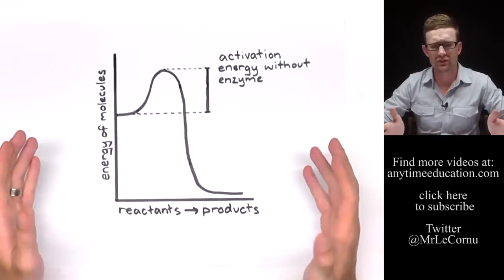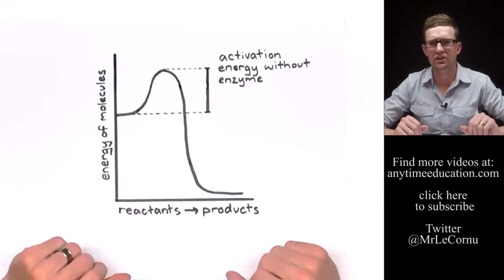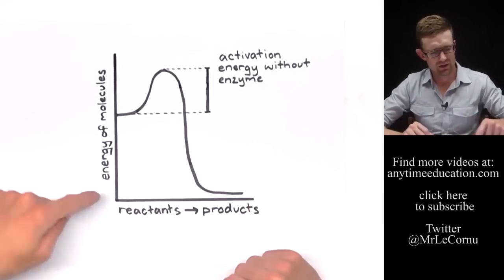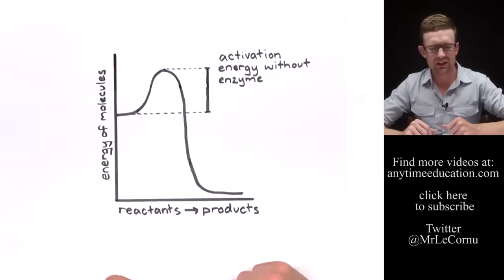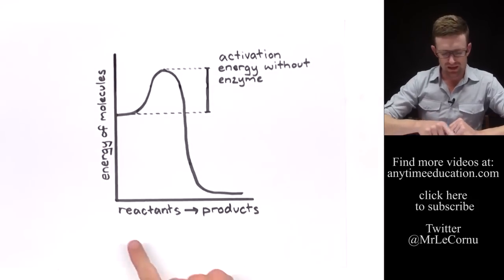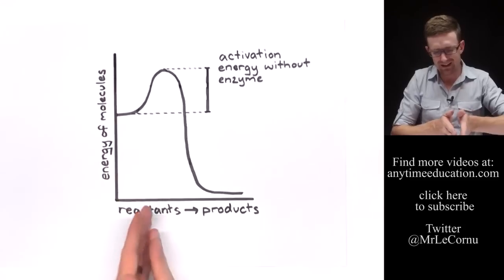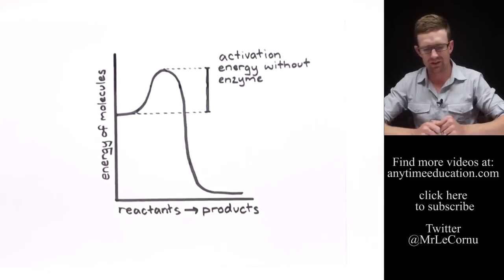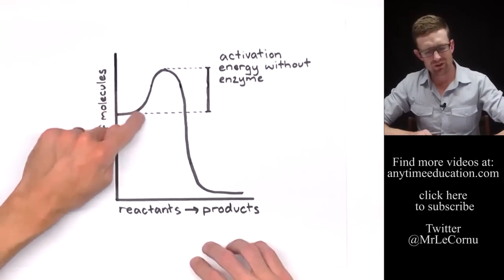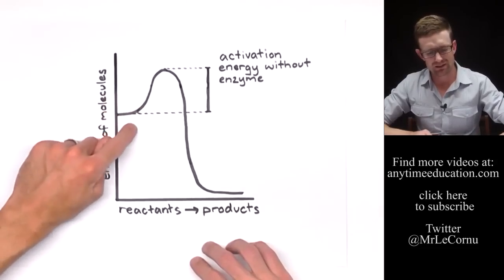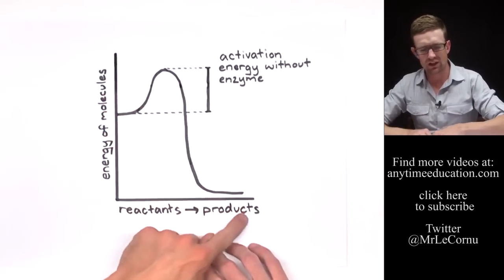So here's a graph to help me explain activation energy in the reaction. On the y-axis we've got the energy of molecules, and on the x-axis we've got the reactants at the start and then the products over here at the end. So we've got this much energy in our reactants and we've got this much energy in our products.